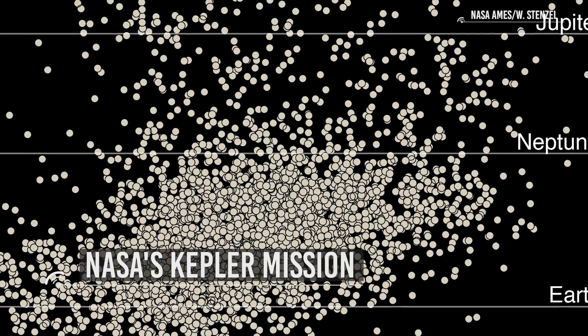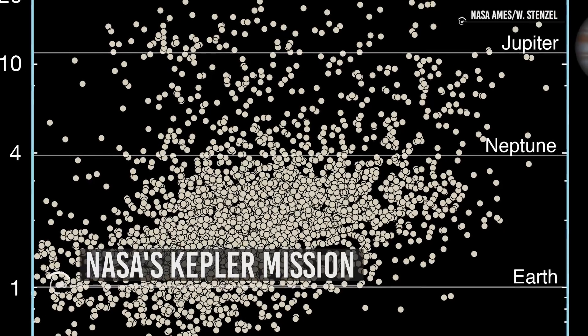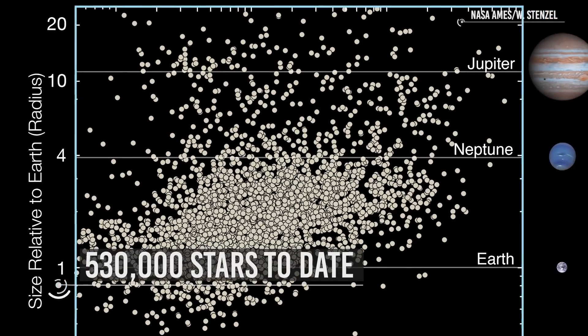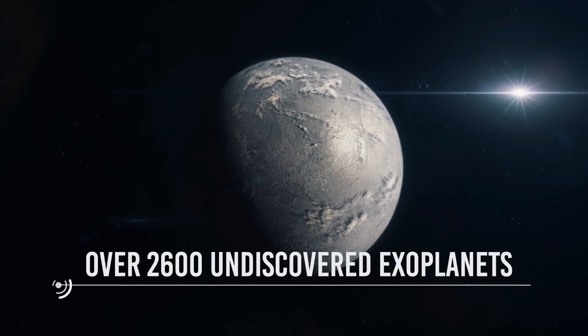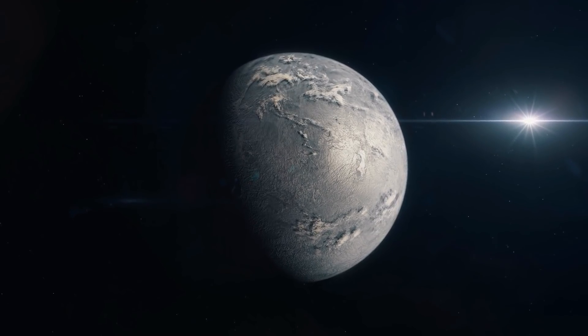NASA's Kepler mission has fundamentally altered the game when it comes to studying exoplanets and other distant worlds. It has observed around 530,000 stars to date. There are over 2600 undiscovered exoplanets. One of these hundreds of thousands of stars jumps out as particularly odd.